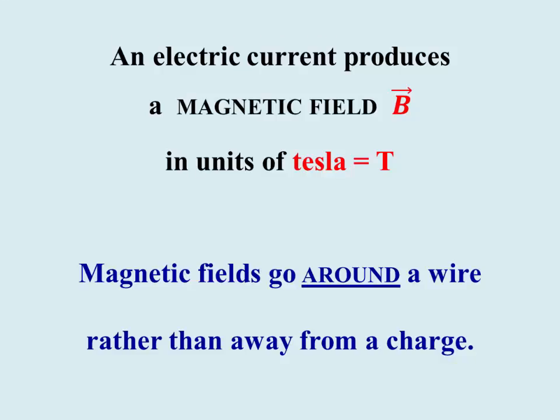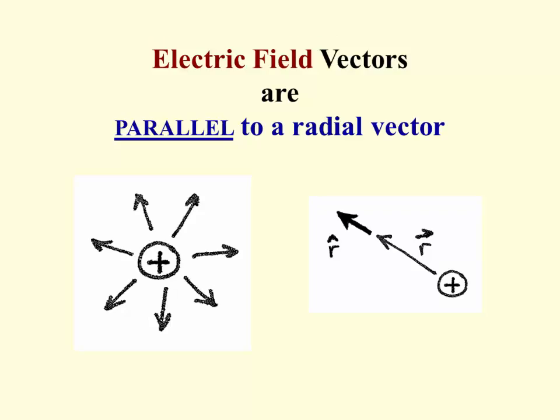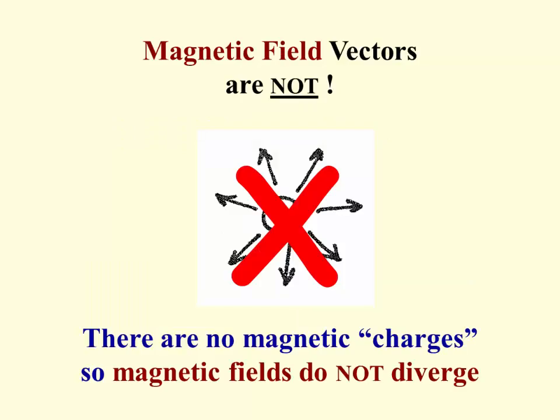A current produces magnetic field B, units Tesla, that goes around a wire rather than away from a charge. This is our basic conceptual difference that we need to focus on when learning this material. Our electric fields were parallel to a radial vector, but magnetic fields are not.